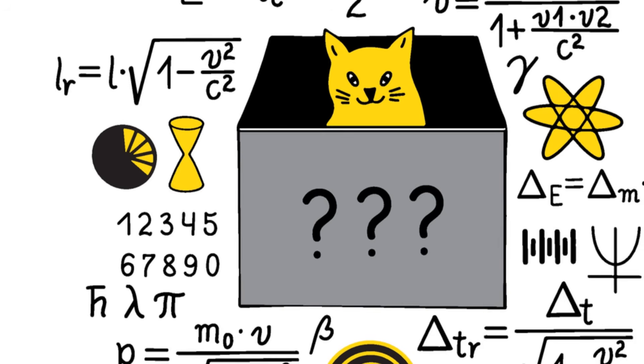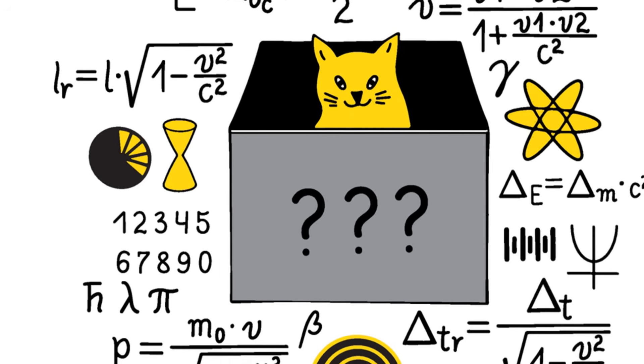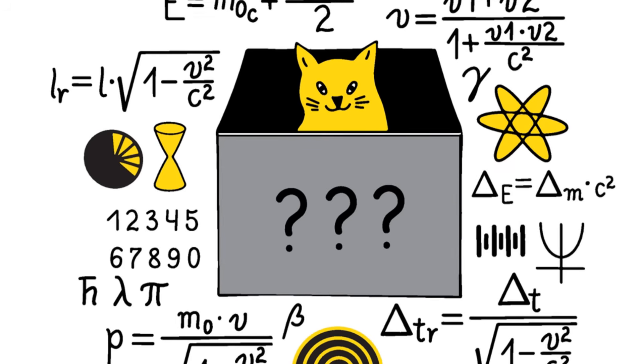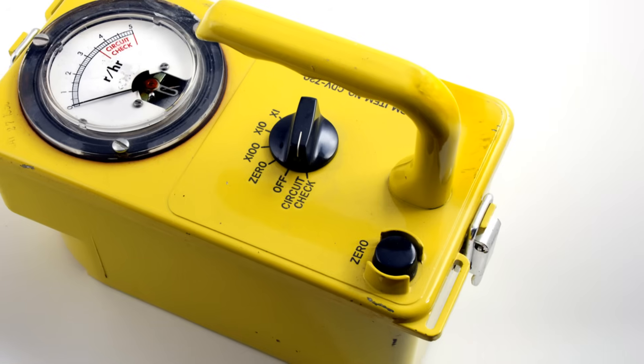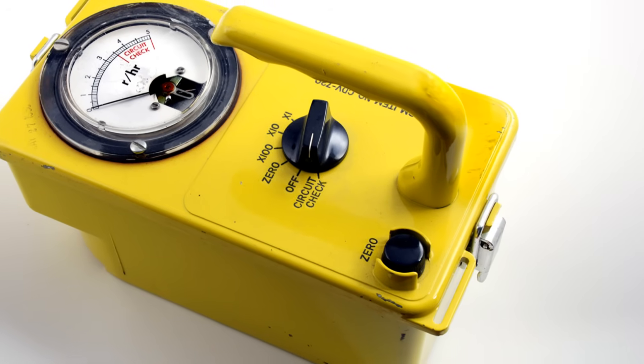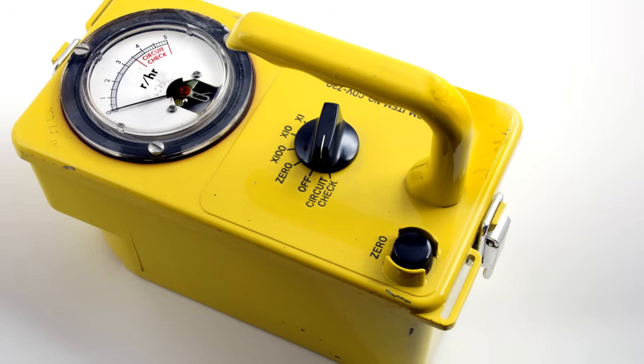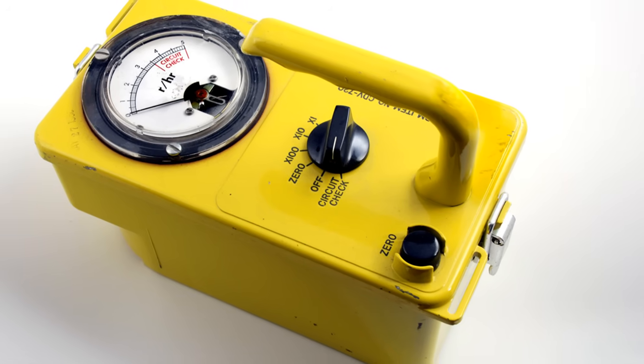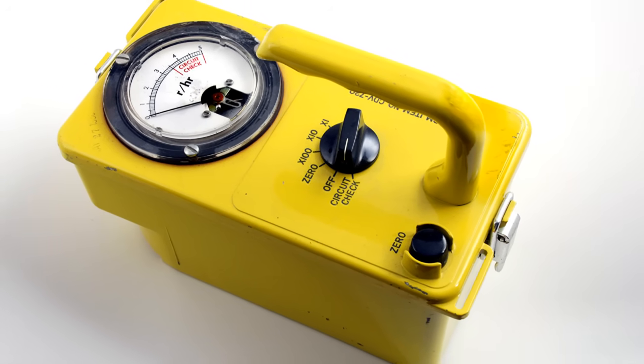Hypothetically, a cat is placed in a sealed box with a radioactive atom, a Geiger counter, and a vial of poison. If the atom decays, which is a quantum event with 50% probability, the Geiger counter triggers the poison release, hypothetically killing the cat.